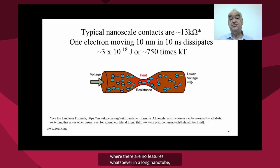where there are no features whatsoever in a long nanotube, which seems difficult to do if you want to have electronic circuits, then you're going to have something like 750 times kT or 3 times 10 to the 18th joules energy dissipation as you switch in your switching operations. This is a lot of heat and is going to cause problems if you have electronic devices.